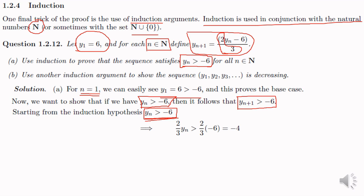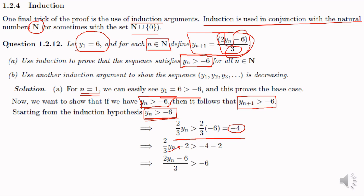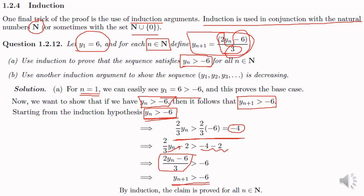Multiplying by 2/3 gives 2/3 · yn greater than 2/3 · (minus 6), which is minus 4. The second term in y(n+1) is minus 6/3, which is minus 2. So we subtract 2 from both sides, giving (2/3)yn minus 2 greater than minus 4 minus 2. Simplifying: (2yn minus 6)/3 is greater than minus 6, and (2yn minus 6)/3 is y(n+1). So y(n+1) greater than minus 6. Hence by mathematical induction the claim is proved for all n element of N.